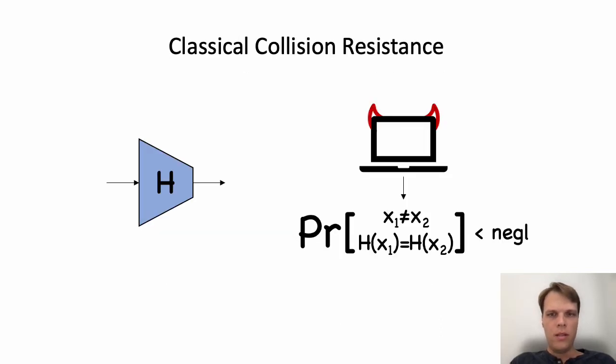Let's start with the classical notion of collision resistance. Here we have a hash function h whose outputs are shorter than their inputs. This means that there must be many colliding inputs to h. However, classical collision resistance assumes that despite existing, it is infeasible for any efficient adversary to actually find a collision. This property of compressing the input while having computationally hidden collisions has tremendous applications throughout cryptography, making collision resistance one of the core cryptographic building blocks.